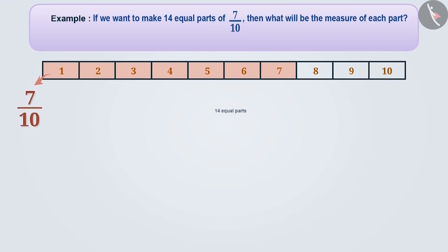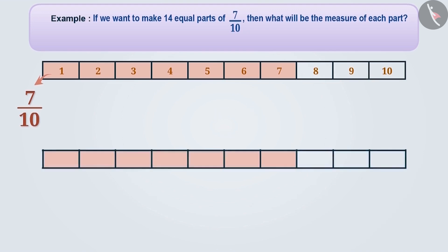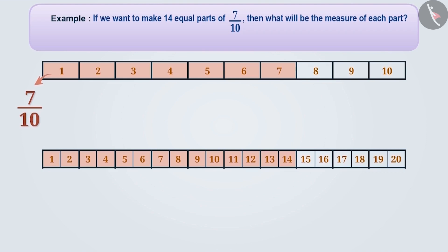Now can you guess how we will make fourteen parts of the shaded part? If we make two equal parts of each part, then we will have fourteen equal parts of the seven by ten shaded region. Here one part is one of all twenty parts of the complete strip, which we denote by the fraction one by twenty. Therefore, the measurement of each part will be one by twenty.